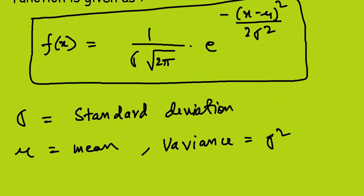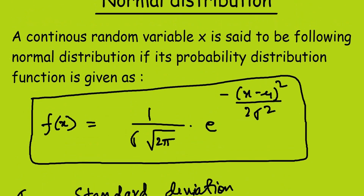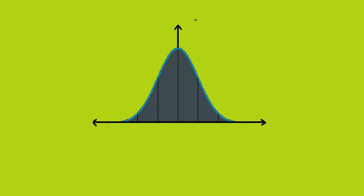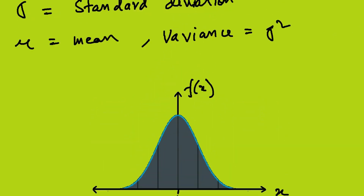Now we will see the curve for the normal distribution. The normal distribution curve is always symmetric about the mean, where mean equals μ. So the peak of the curve is at μ. Now we will convert this into standard normal distribution.